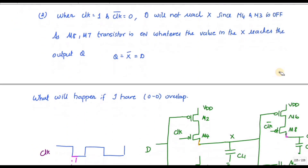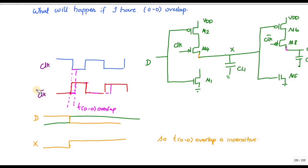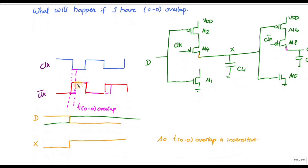Now let's discuss what happens during a zero-zero overlap. Due to noise or environmental conditions, the clock-bar signal gets delayed, causing both clock and clock-bar to go to zero simultaneously — this is called zero-zero overlap. During this overlap, the N-MOS transistors with clock-bar input are open circuit since N-MOS turns on only when the input is one.